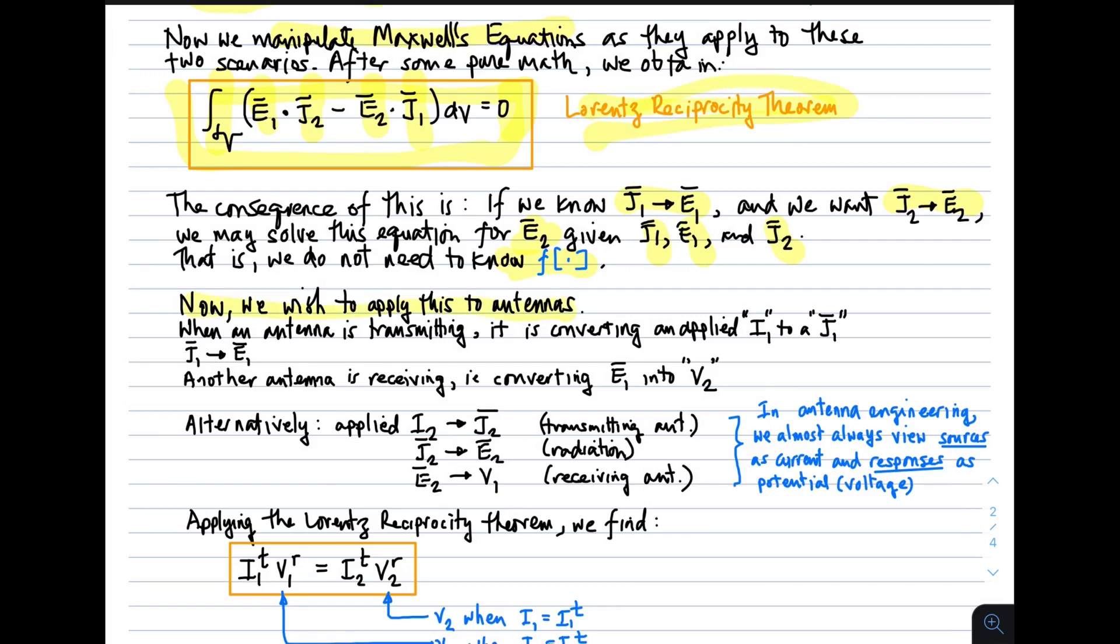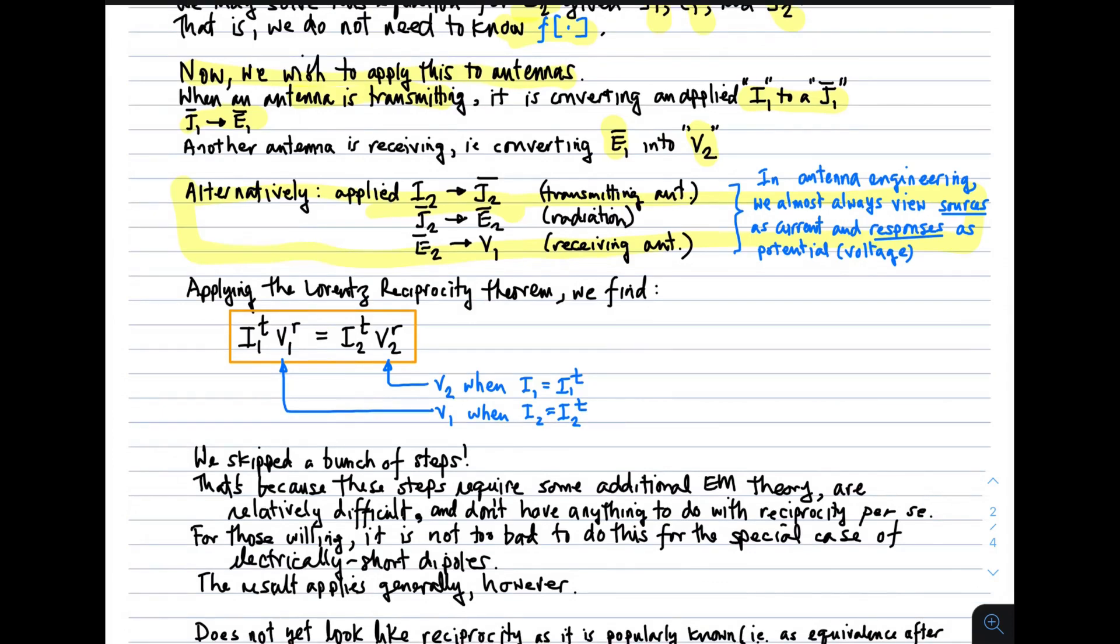Now we wish to do this with antennas. When an antenna is transmitting, it is converting an applied current into a current distribution. That current distribution radiates. And then another antenna is receiving, which is converting that field, which has been radiated by the first current distribution, into some voltage, which is subsequently measured by a receiver. Now, applying the reciprocity theorem, we find the following. I1, in the case where the transmission is happening from the first port, times V1, in the case where transmission is happening from the second port, is equal to I2, when the second port is transmitting, times V2R, which is V2, when the first port is transmitting.